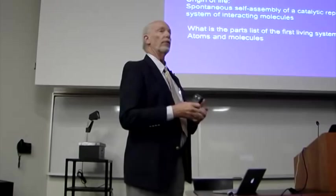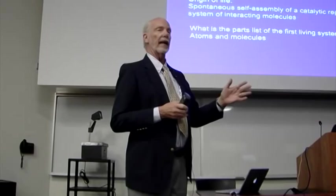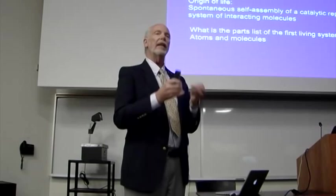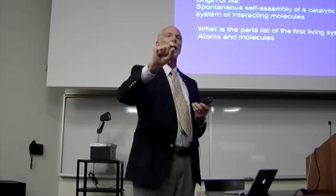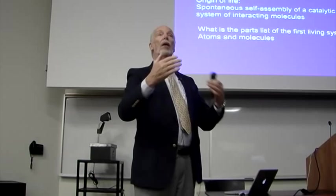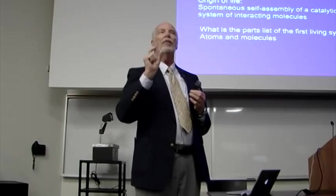So what is the parts list of the first living systems? Well, there were no genes, no enzymes, no proteins — just atoms and molecules on the early earth and a source of energy. When energy flows through a system of atoms and molecules, it causes things to happen that would not happen in the absence of that energy. We call this moving the state of those atoms and molecules away from equilibrium. Every one of you lives away from equilibrium — you reach equilibrium when you're dead.